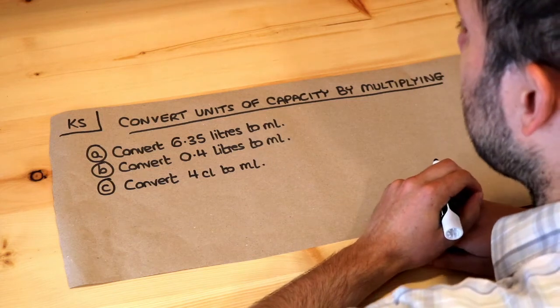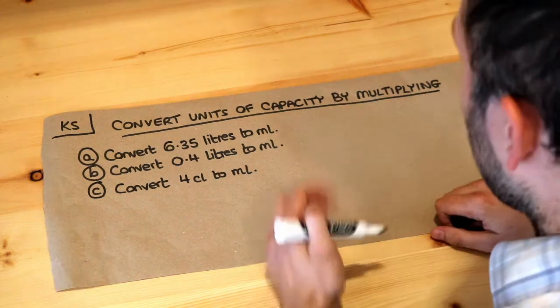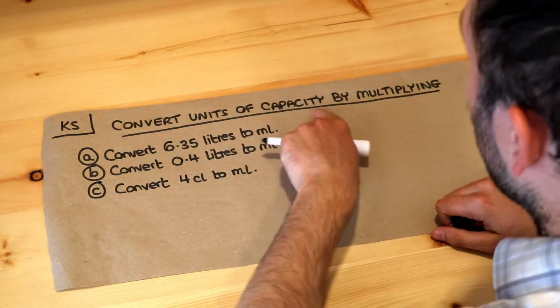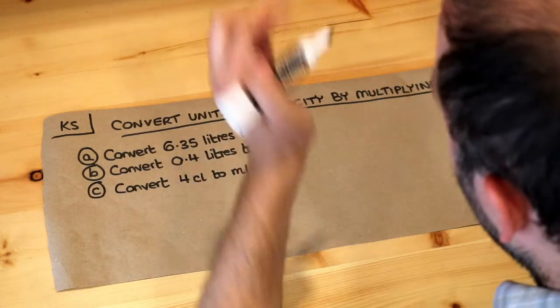Hello and welcome to this Dr. Osama's key skill video on converting units of capacity by multiplying. Now capacity is similar to volume, but for example we might talk about the capacity of a vase. So how much space could you fill inside the vase?